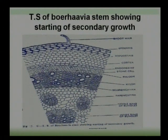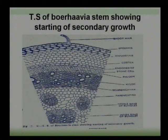These medullary bundles produce a small amount of secondary tissue — secondary phloem towards the outside and secondary xylem towards the inside.